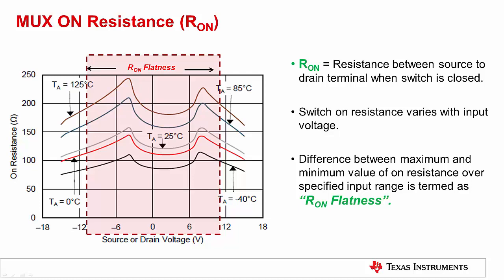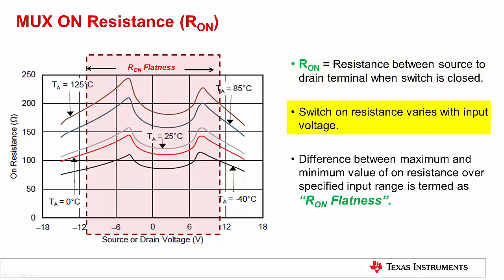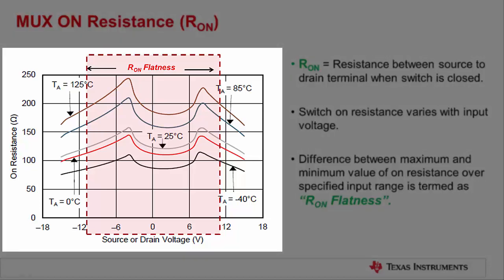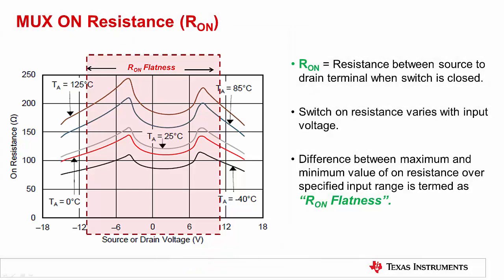Switch ON resistance is the resistance between the source pin and drain pin when the switch is closed. As discussed earlier, switch ON resistance varies with input voltage. The difference between the maximum and minimum value of ON resistance over a specific input voltage range is termed as R ON flatness. The R ON flatness specification, as well as the ON resistance versus drain-to-source voltage curve, is given in the datasheet. The typical R ON curve for the MUX36S08 device is shown here. Greater R ON values will introduce larger gain errors. Also, larger R ON values create an offset voltage error when leakage current flows through the MUX. Finally, depending on the circuit configuration, R ON modulation with input voltage can introduce variations in gain error which produce signal-dependent distortion. We will cover the distortion in detail later and show how some circuit configurations can virtually eliminate this problem.